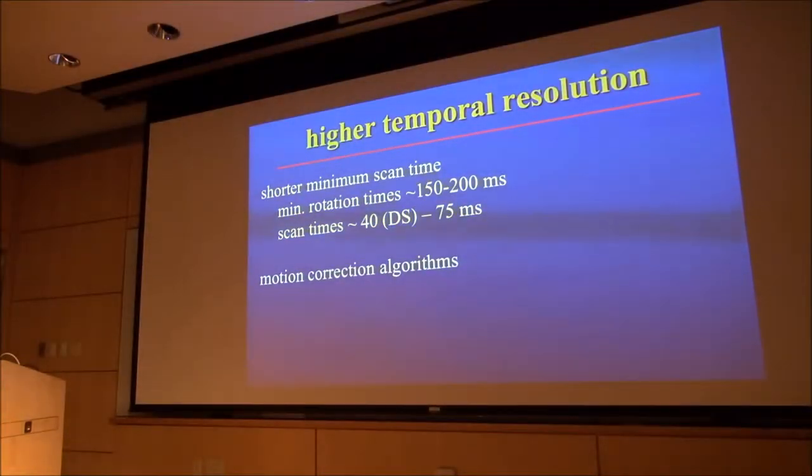To summarize temporal resolution: minimum scan times will continue to go down from the current 250 to 300 milliseconds to maybe 150 to 200 milliseconds. With the dual source scanner the temporal resolution is improved by another factor of two. Motion correction algorithms will have a bigger effect at least in coronary artery imaging and hopefully in other forms of cardiac imaging as well.